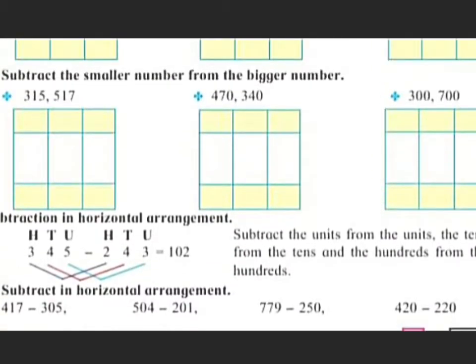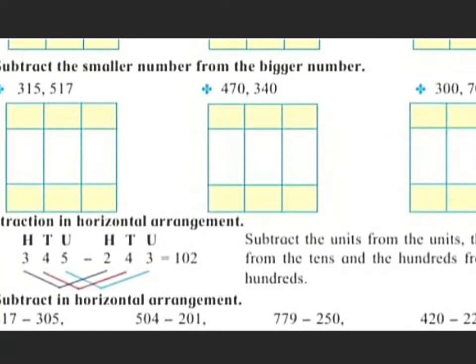Now let's see — subtract the smaller number from the bigger number. Here there are three examples given. First is 315 and 570. You have to find out which number is smaller and which is bigger. Here 315 is the smaller number because at the hundreds place there is 3, and in the other number there is 5, and 3 is smaller than 5.